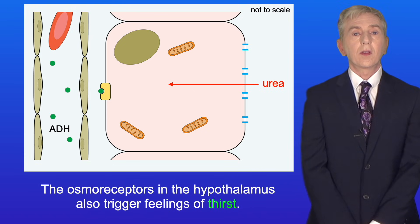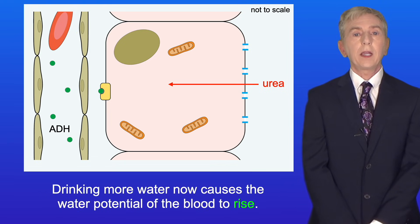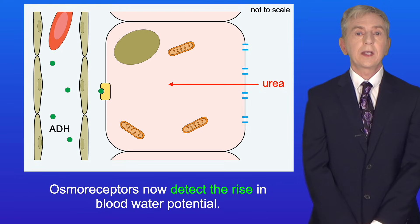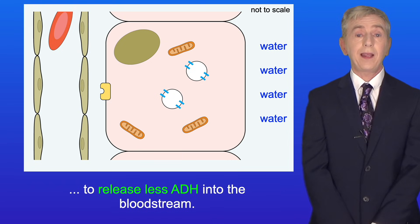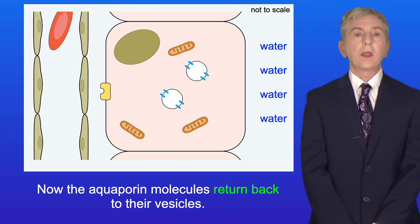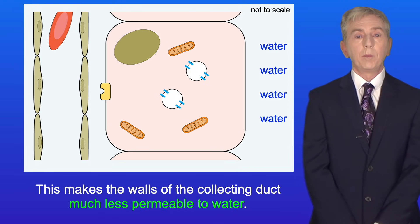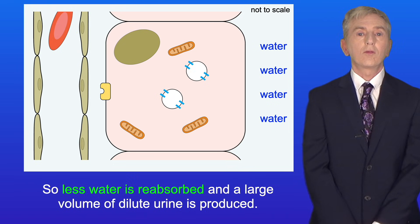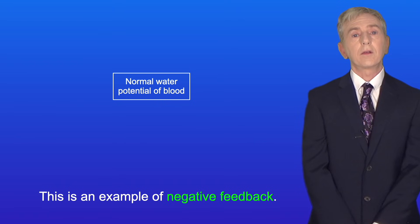The osmoreceptors in the hypothalamus also trigger feelings of thirst, making the person drink more water. Drinking more water causes the water potential of the blood to rise. Osmoreceptors now detect the rise in blood water potential and trigger the posterior pituitary gland to release less ADH into the bloodstream. The aquaporin molecules return back to their vesicles, making the walls of the collecting duct much less permeable to water. Less water is reabsorbed and a large volume of dilute urine is produced. As you can see, the water potential of the blood is tightly controlled — this is an example of negative feedback.